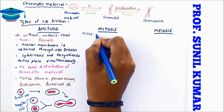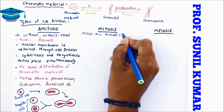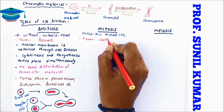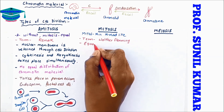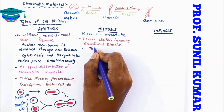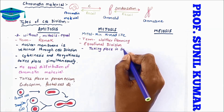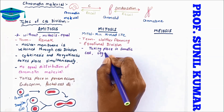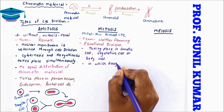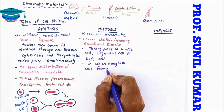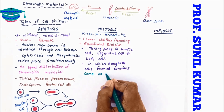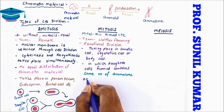Let's understand the most important type of cell division — mitosis. The word 'mitosis' comes from 'mitos' meaning thin thread-like structure. The term mitosis was given by Walter Flemming. It is an equational division taking place in somatic cells, vegetative cells, or body cells.